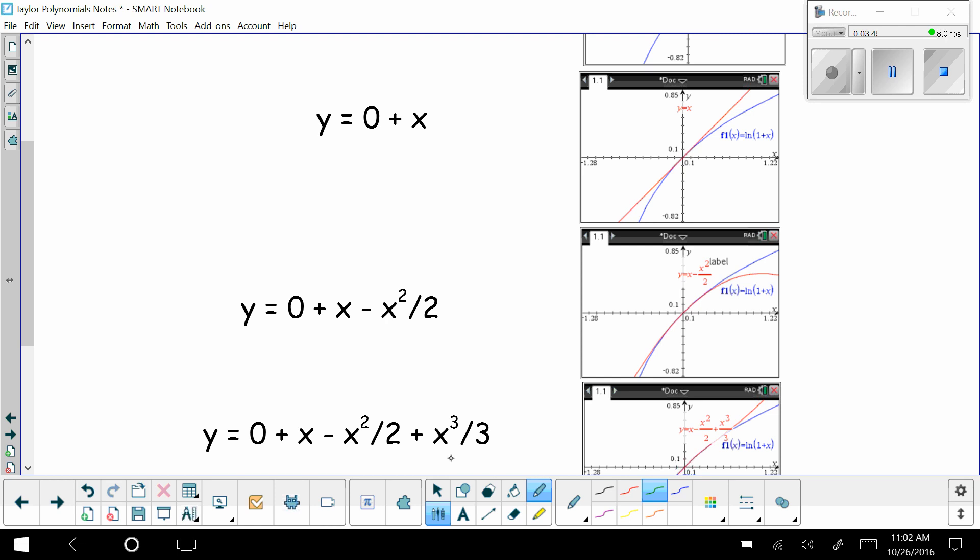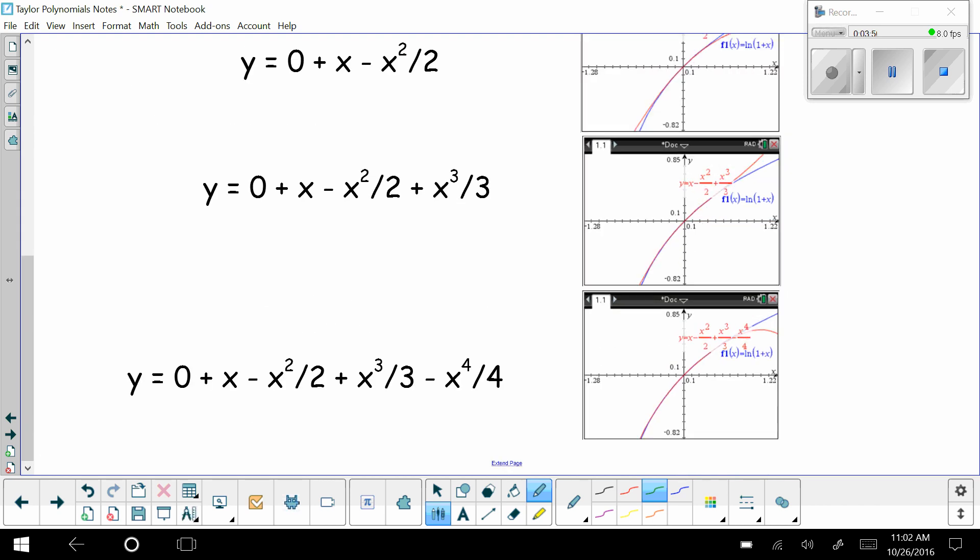Well, then if I take my parabola and add on an x cubed over 3 to get a cubic, I get even more of a match between the function and this cubic curve. So I have even more x's that I can plug into this cubic polynomial rather than into the logarithm to get estimates. And then if I take my cubic and subtract x to the fourth over 4, again, I just get a better fit. And I can use the polynomial rather than the logarithm for even more x's.